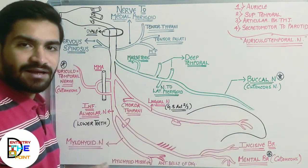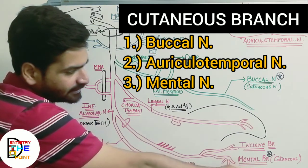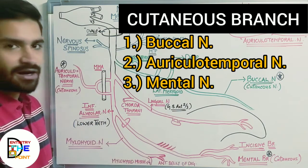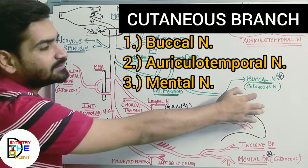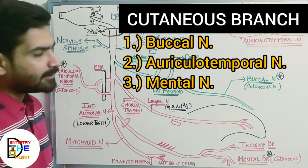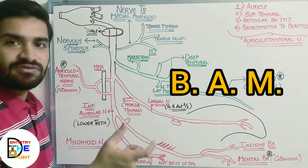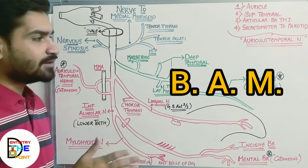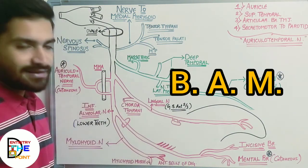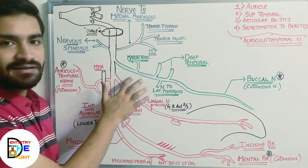The buccal nerve is a cutaneous branch of the mandibular nerve. There are three cutaneous branches of the mandibular nerve in total: buccal nerve, mental nerve, and auriculotemporal nerve. A useful mnemonic to remember these is BAM — B for buccal, A for auriculotemporal, and M for mental. Think of 'balm' applied on the skin (cutaneous), so BAM is easy to remember.